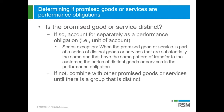There's an exception in the guidance referred to as the series exception for not treating an individual obligation as a separate performance obligation. Under this series exception, when you've got a promised good or service that's part of a series of distinct goods or services that are substantially the same and have the same pattern of transfer to the customer, then the series of distinct goods or services is the performance obligation, not the individual item. The series exception is not optional — it is not an election, you have to apply it.